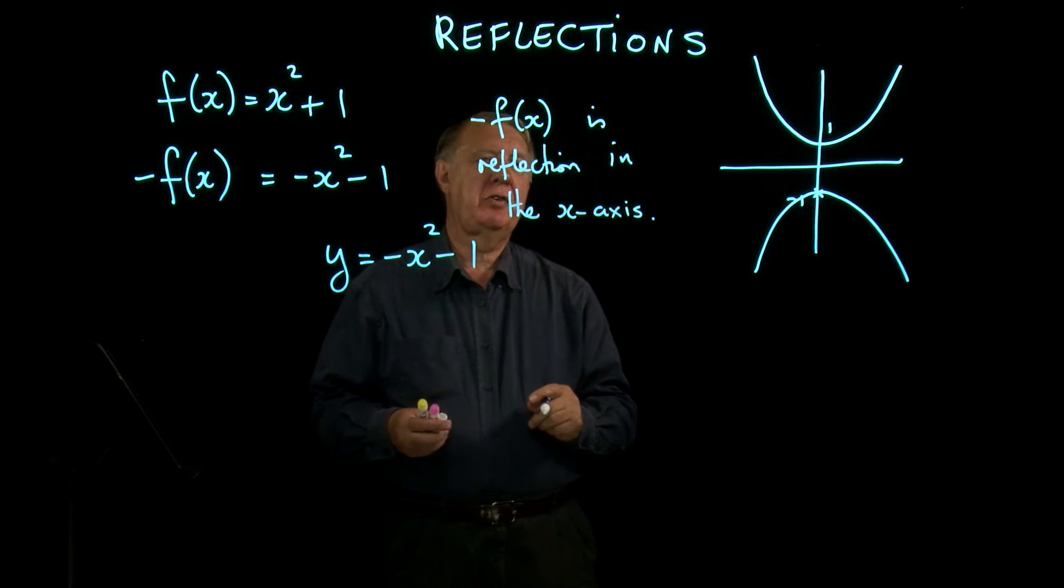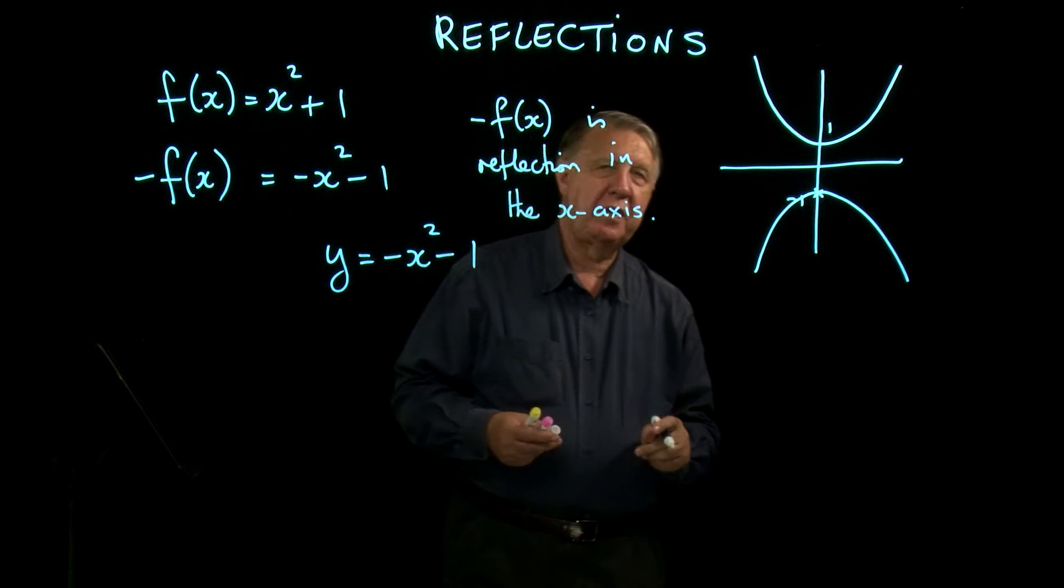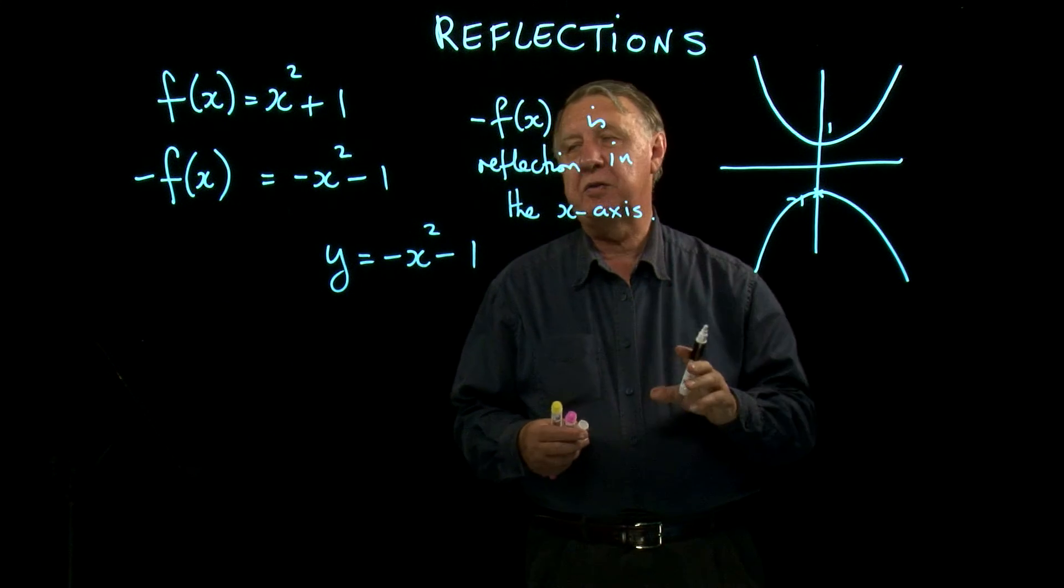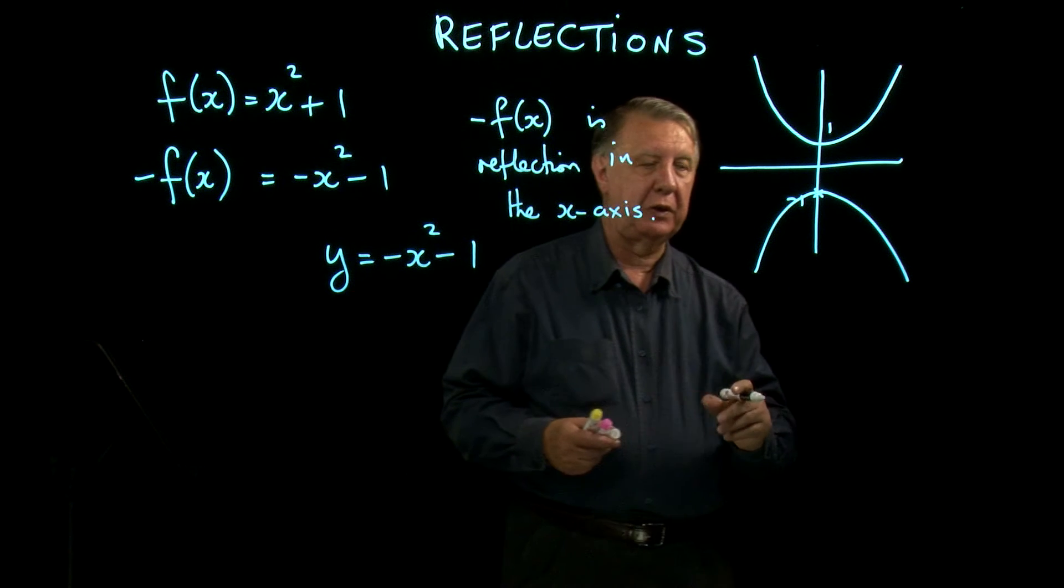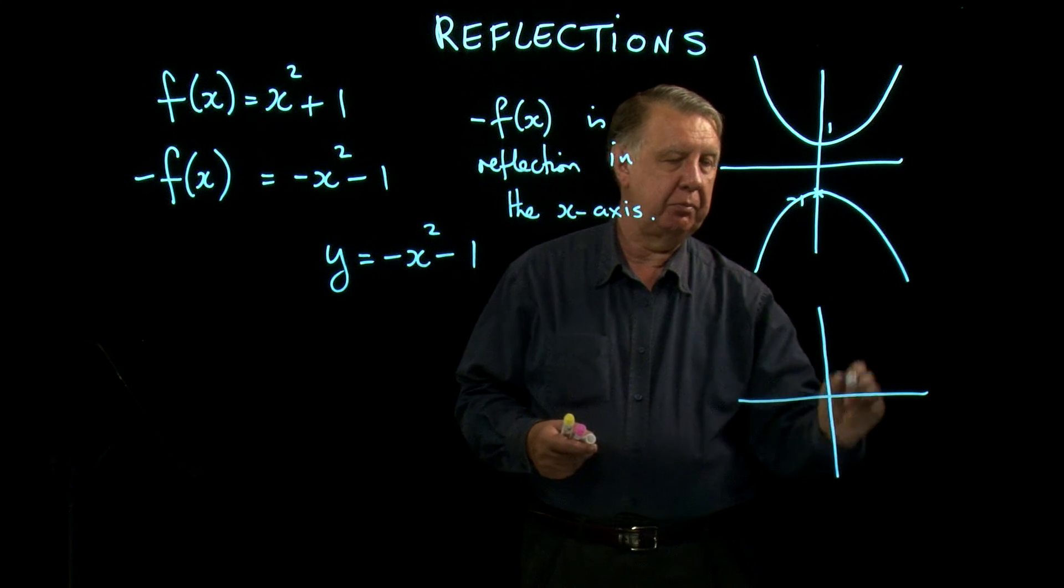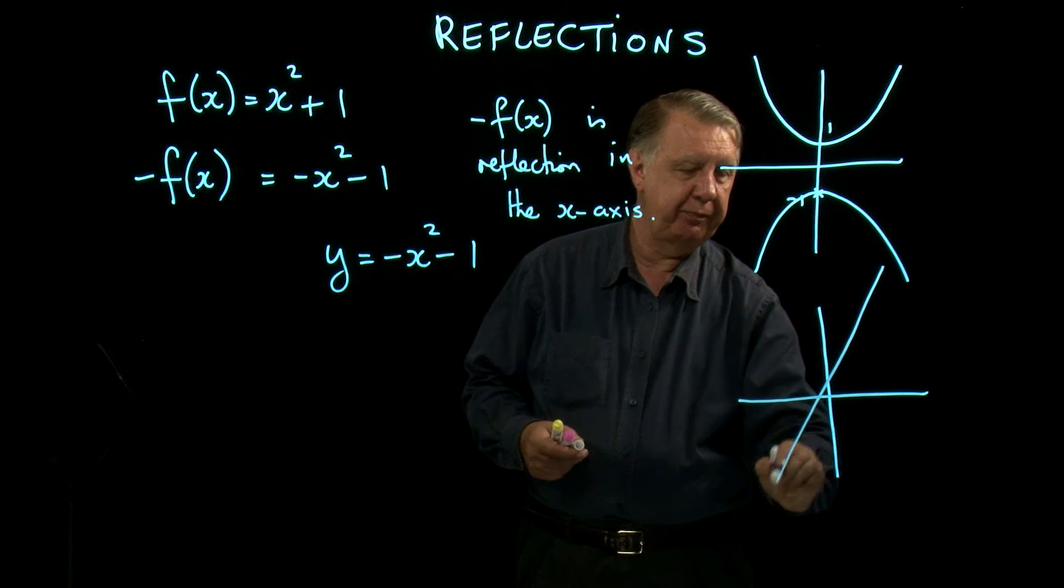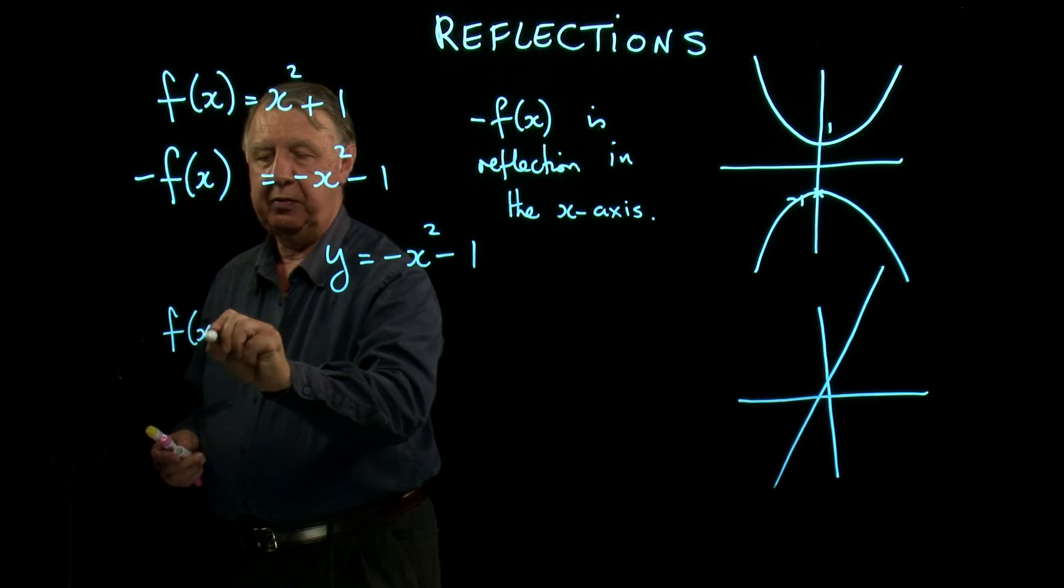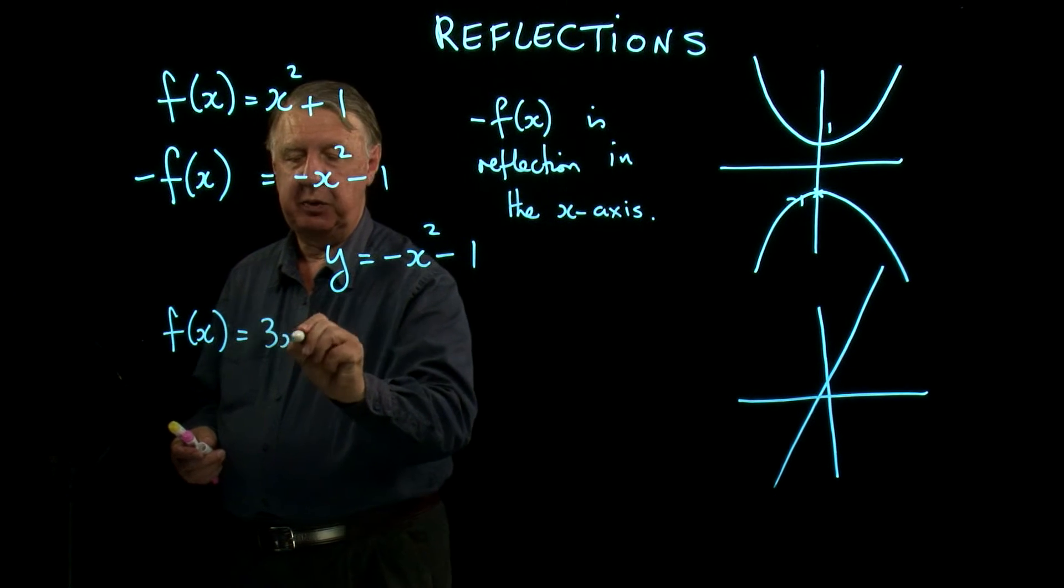What about reflection in the y-axis? I need to be a bit careful with this as an example. Because if I reflect that one, it's going to stay the same. So that wouldn't be a very good example to look at. So let's try a straight line. We'll have f of x equals 3x plus 1.